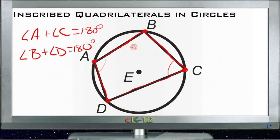So it's an inscribed quadrilateral if all four vertices touch the insides of the circle and if the opposite angles add up to be 180 degrees.